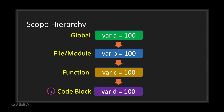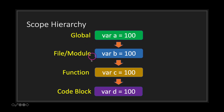Lastly, we have our code block which declares variable D. At this level we have access to variables A, B, and C. However, everything in the scope hierarchy above our code block does not have access to variable D. At the top we are blind to all variable declarations at scope levels beneath the global, while at the bottom we have access to all variables declared in scope levels above our current hierarchy.